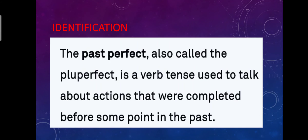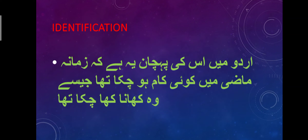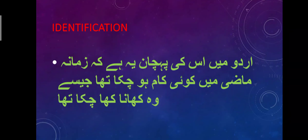Identification. The past perfect, also called the pluperfect, is a verb tense used to talk about actions that were completed before some point in the past. In Urdu, its identification is that in past time some work had already been completed — for example, 'he had already eaten food' or 'the sun had already set.'